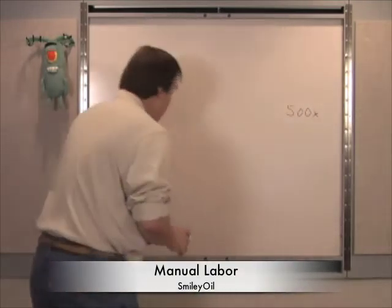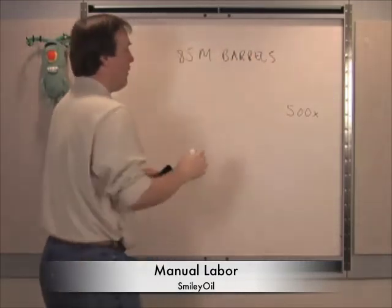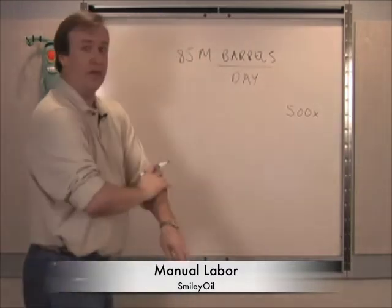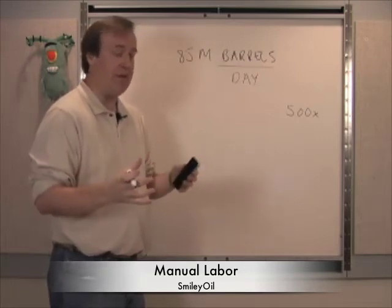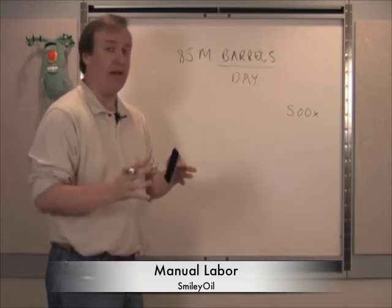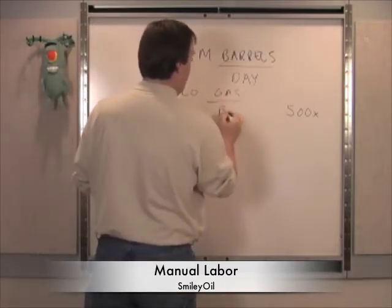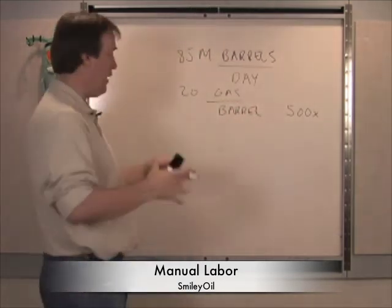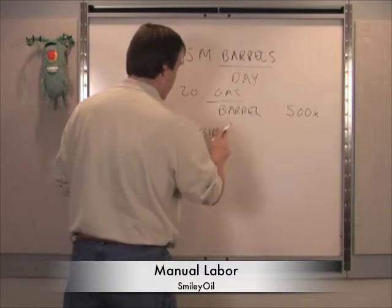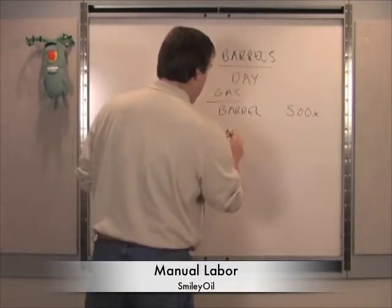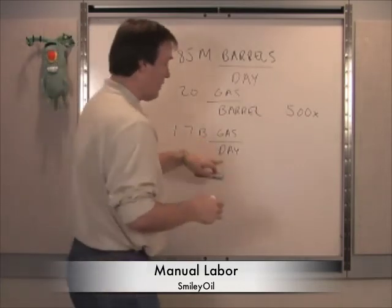Let's take the 85 million barrels of oil consumed in the world per day. We know there are 42 gallons in every barrel, and petroleum companies work hard to extract about half of that as gasoline — so roughly 20 gallons of gasoline per barrel. When you multiply 85 million times 20, you get 1.7 billion gallons of gas per day.